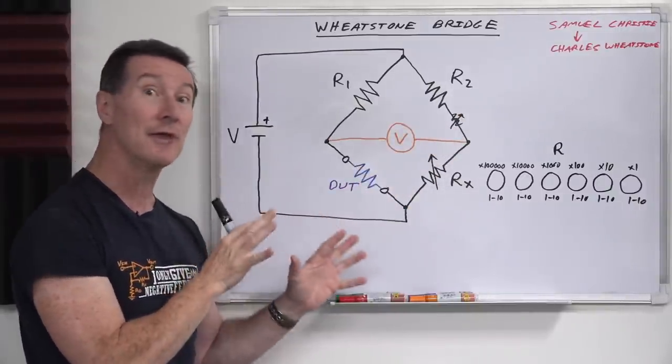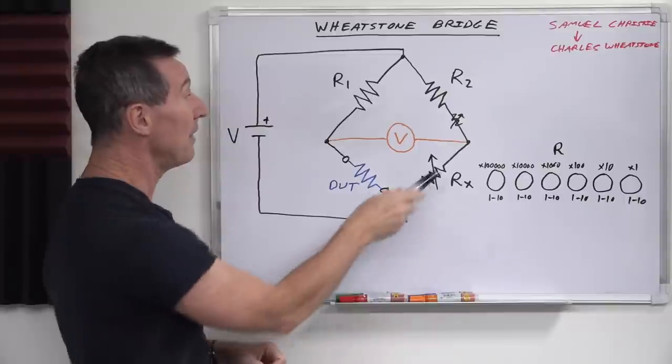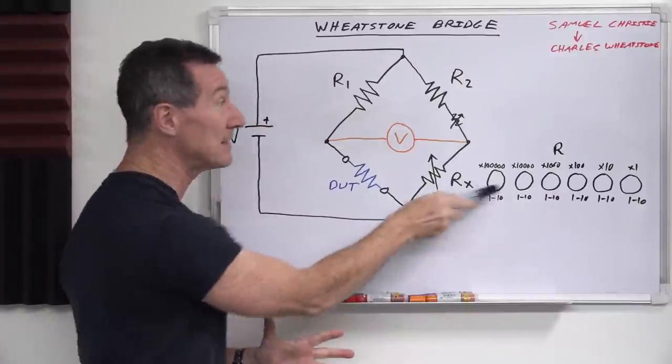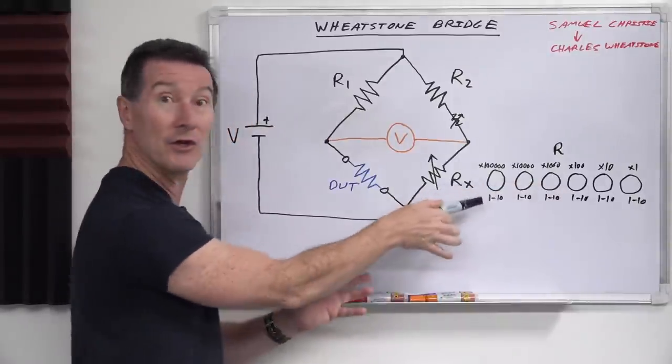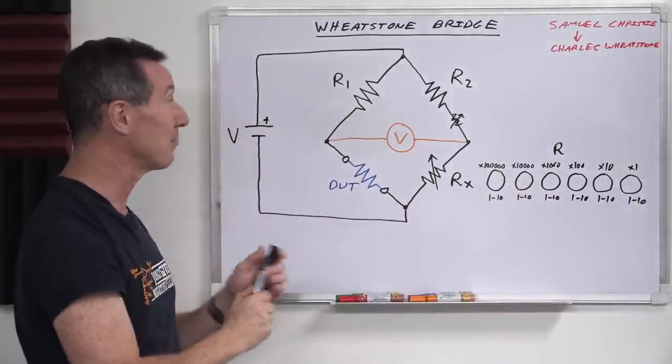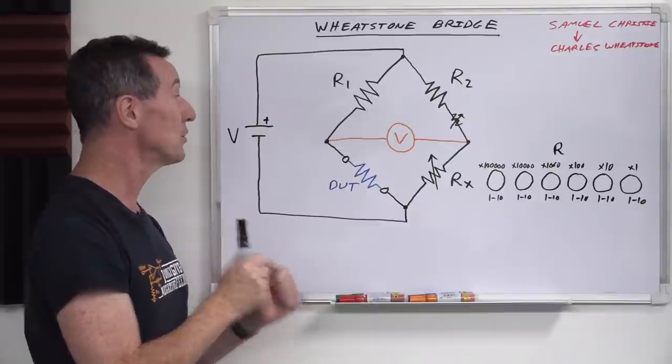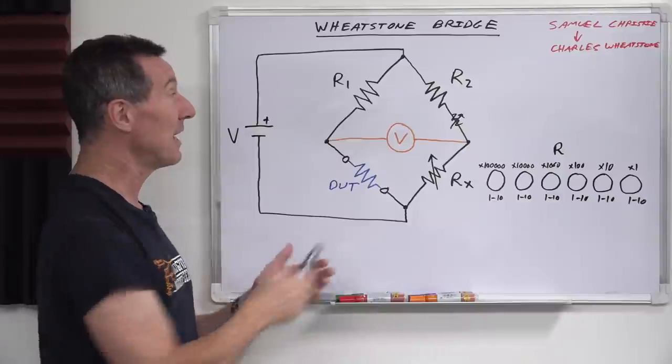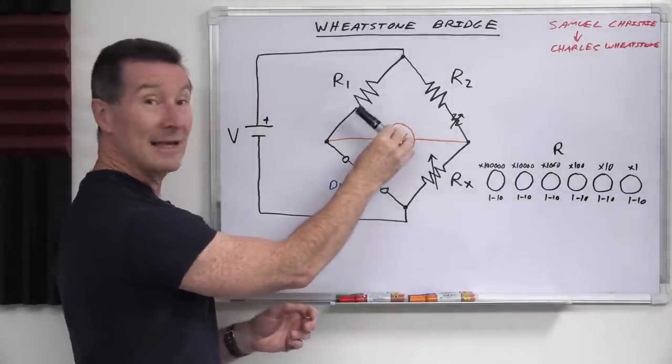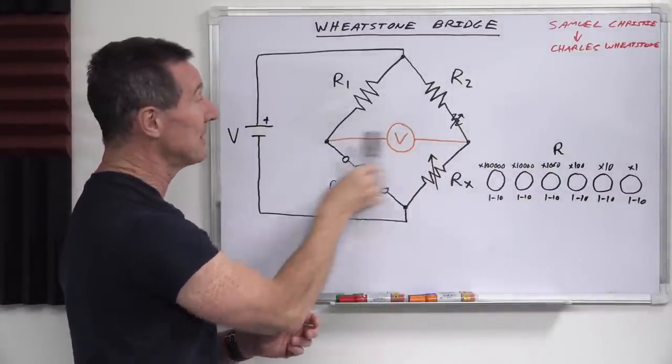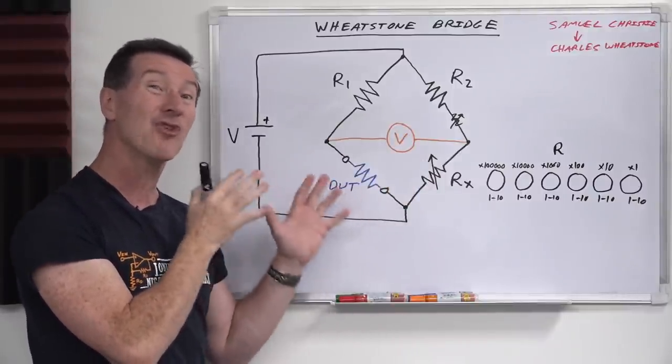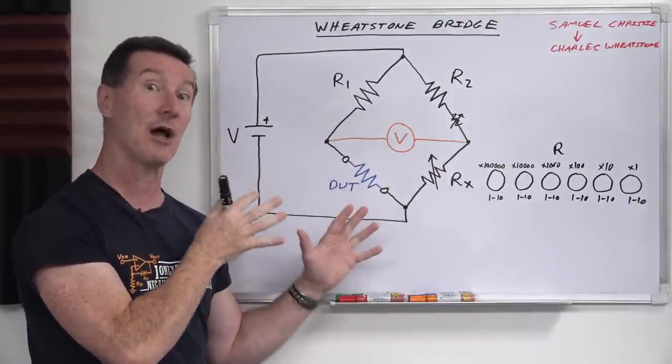And they were the calibration controls that we saw on the front panel there. So once you've actually calibrated this bridge, and you can do that very precisely, then you can actually read off the dials, assuming that these are very precise resistors, but also you can trim these as well. You can calibrate them as accurately as you want to. Then you can just dial off and read your device under test when that meter gets to zero like that. It means there's zero voltage difference between here.